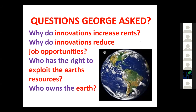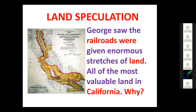George was a young man in California who asked fundamental questions: Why do innovations increase rents? Why do innovations reduce job opportunities? Who has the right to exploit the Earth's surpluses, and who owns the Earth? This map inspired Henry George the most — he saw how railroad roadways had been given enormous stretches of land in California, really all of the most valuable land in the state. Why was it given to the railroads?